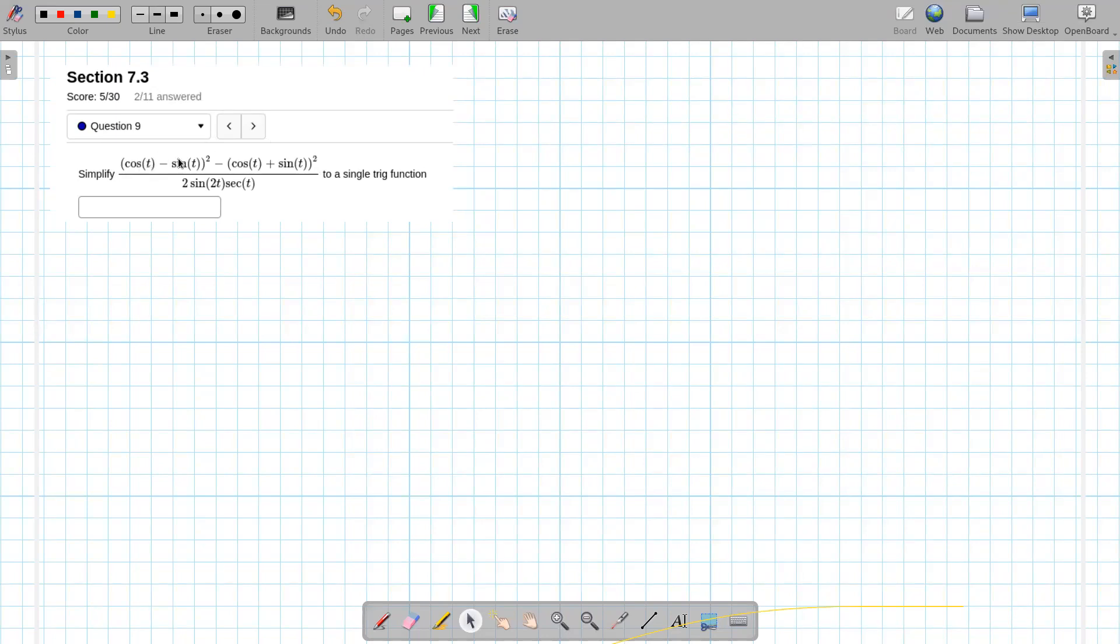So one option here is there is a formula for the sum to angle or difference to angle, that's a possibility, or we could just square all this out and see what happens. We've got a couple options there. For the bottom, sine of 2t, we could use the double angle formula on that, and then I would write the secant as 1 over cosine.